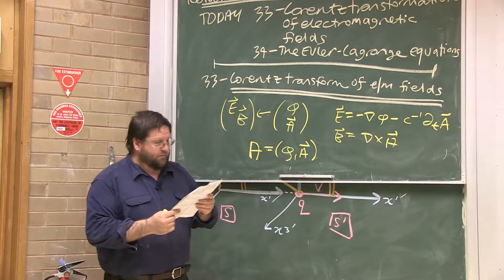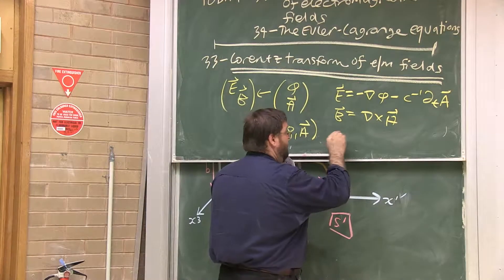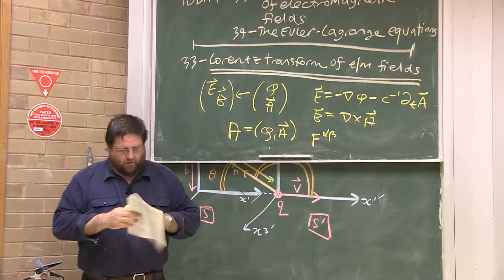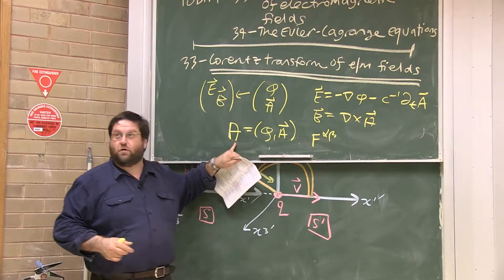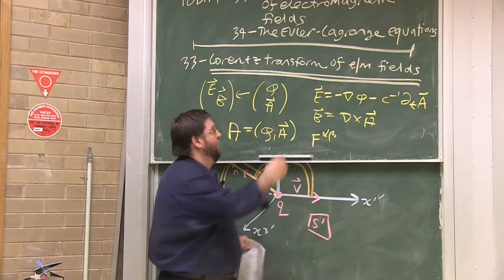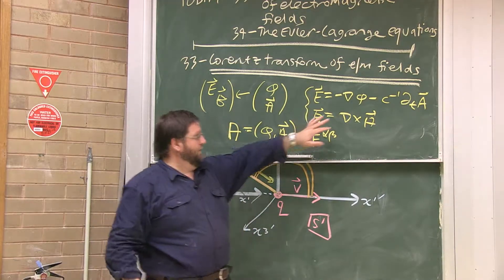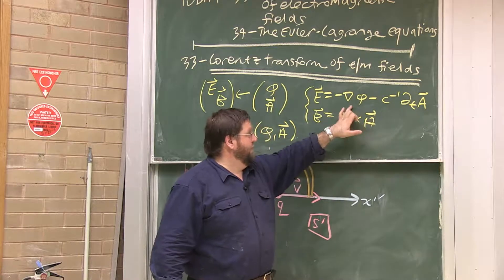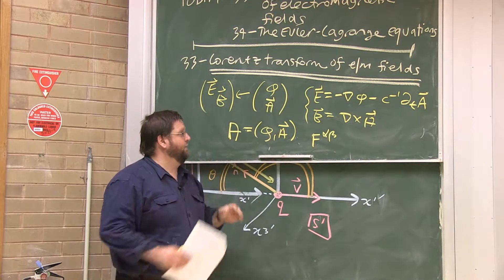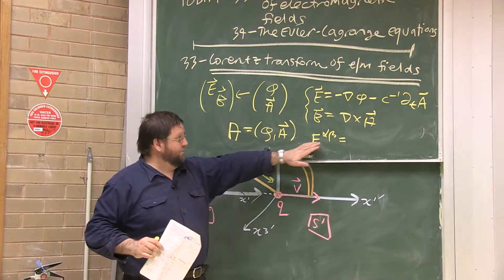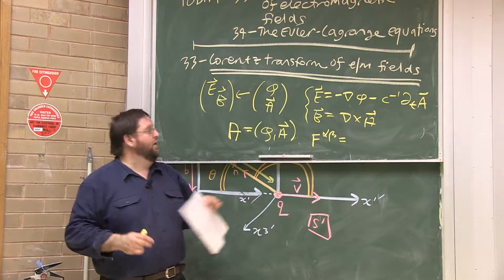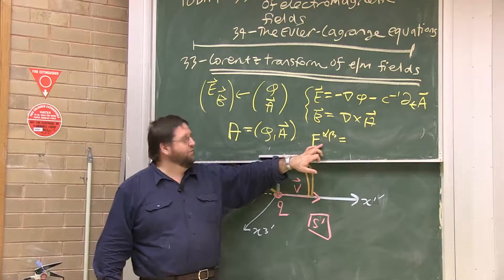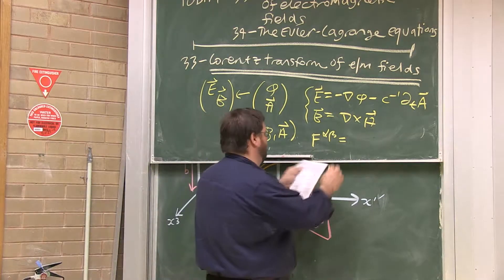We also learned that the Maxwell equations can be tensorialised. This object — called the Faraday tensor — is a tensor. So the four-potential is a tensor, and we introduced the Faraday tensor F. These equations involve spatial and temporal derivatives of the potentials to get the fields, but I want a tensor version of the electromagnetic field. The Faraday tensor is a four-by-four antisymmetric matrix — a rank two contravariant antisymmetric tensor — which involves the derivatives of the potentials.